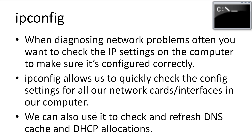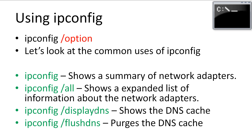Often when having to do any network setup or when diagnosing network problems, you need to check the IP settings on the computer to check if it's configured correctly. IPConfig allows us to check all kinds of config settings for all our network cards or interfaces. IPConfig also lets us check and refresh the computer's DNS cache and DHCP allocations. There are several options we can use.